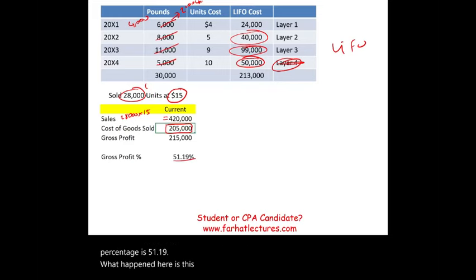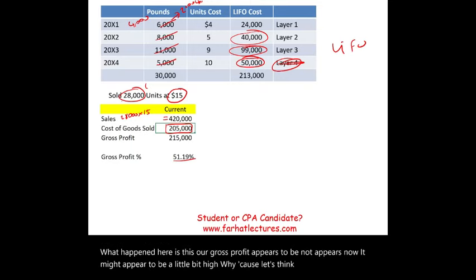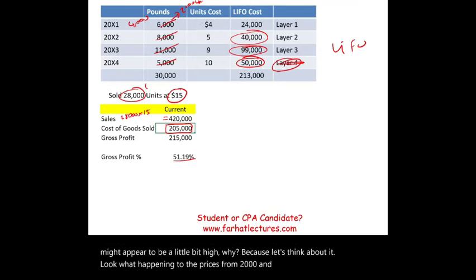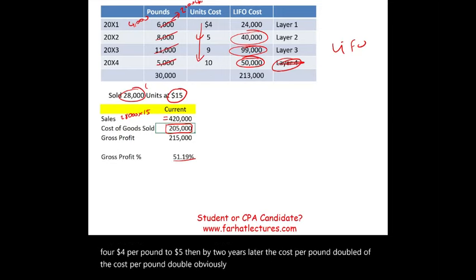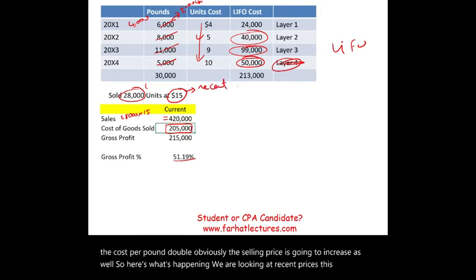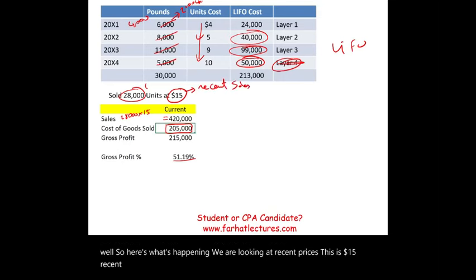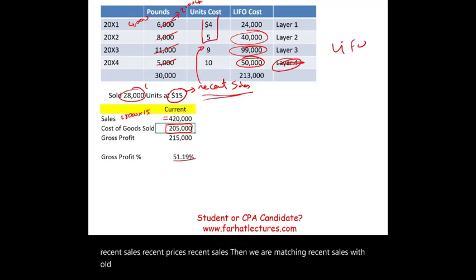The gross profit appears to be a bit high. Look at what's happening to prices from 2001 to 2004 — cost went from $4 per pound to $5, then doubled. Obviously the selling price increased as well. We're matching recent sales at $15 with old cost, and as a result, we have a huge profit.